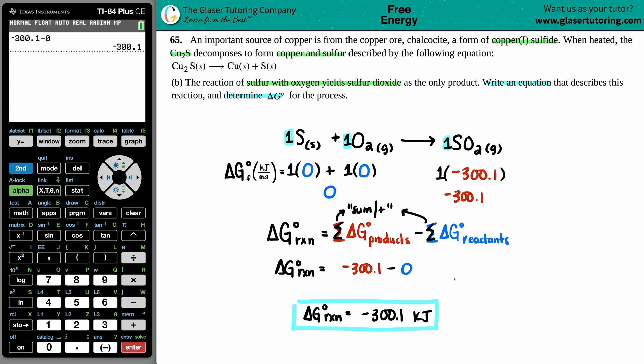So the delta G for this reaction is negative 300.1 kilojoules. So this is a spontaneous reaction—it's a negative value. And there you go. I think we have one more part for this one, so hang tight if you guys are on the playlist. I'll see you in a little bit. Thank you so much for your support. Let's keep learning and working through the problems. I'll see you in a little bit. Bye bye.